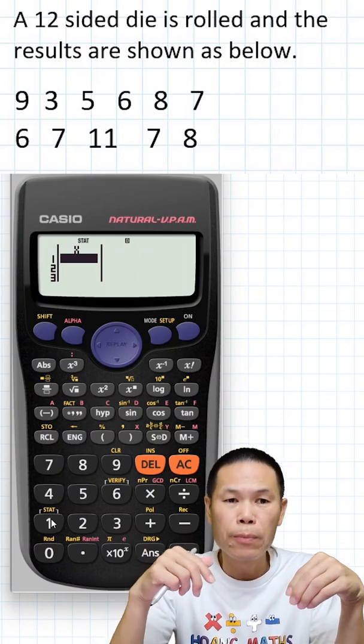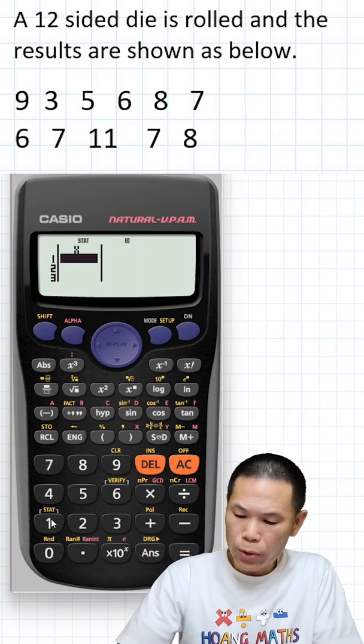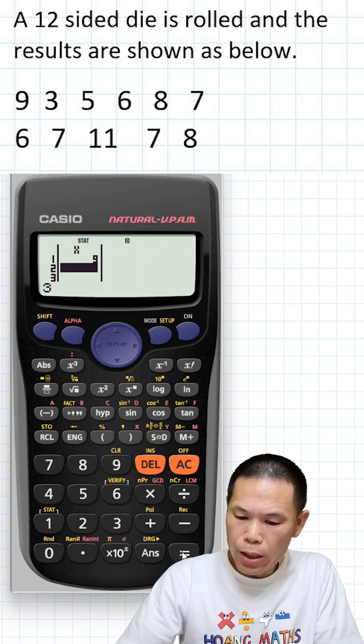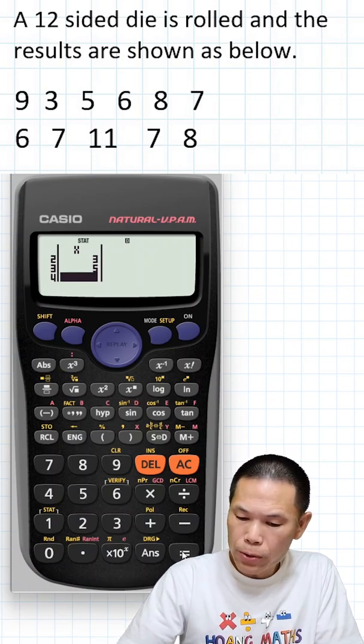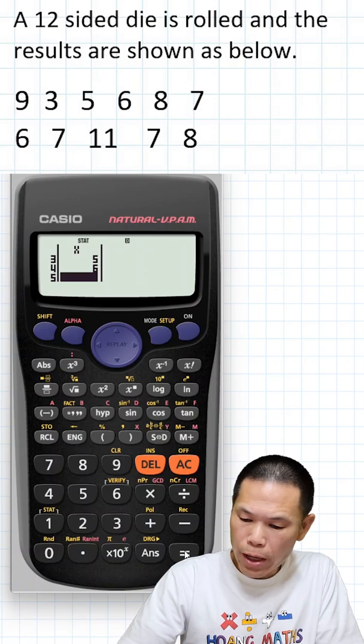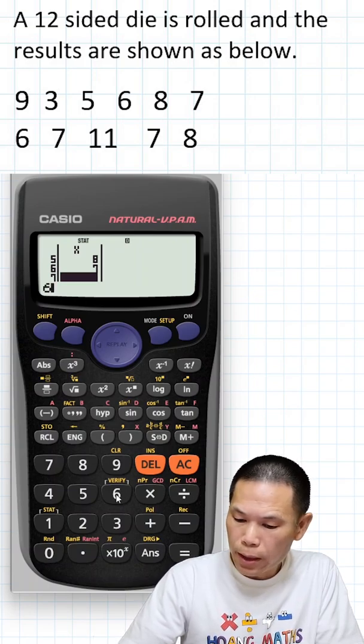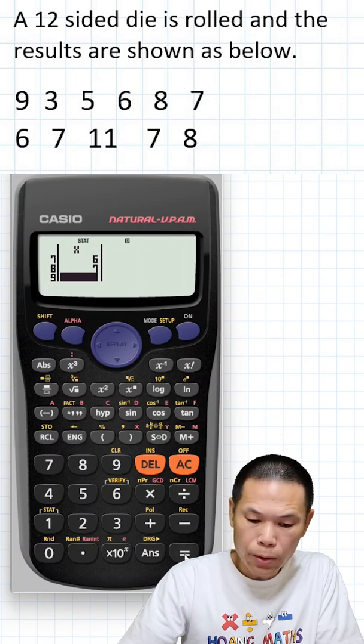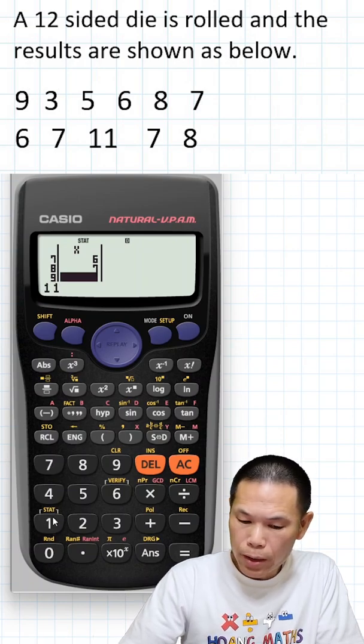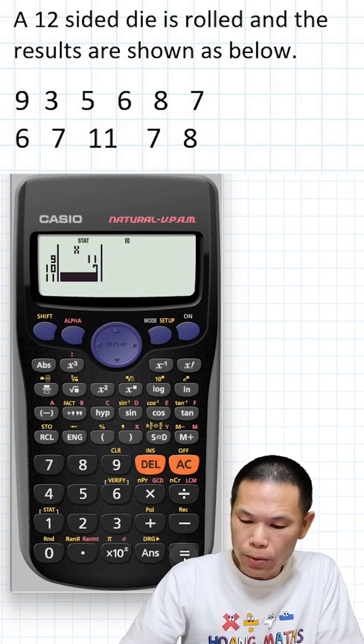Let's enter the values: 9 equals, 3 equals, 5 equals, 6 equals, 8 equals, 7 equals, 6 equals, 7 equals, 11 equals, 7 equals, 8 equals. That's it.